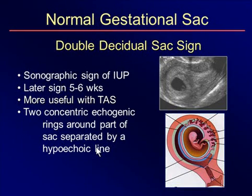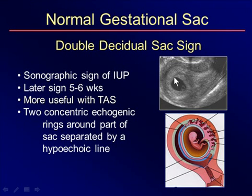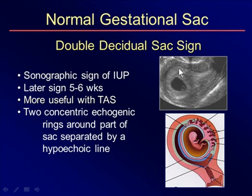Now let's talk about the double decidual sac sign, which is another sign of intrauterine pregnancy seen a little later at five to six weeks menstrual age. It's more useful with transabdominal sonography but can help periodically with transvaginal scans. Basically we see two thick echogenic bands around the pregnancy — a thick band surrounding the gestational sac itself, which is a combination of chorionic and decidual tissue, then a thin lucent hypoechoic stripe representing the collapsed potential cavity, and then another thick band on the other side representing the decidua parietalis. Not around the entire sac, but certainly around a portion of it. If we see that, it's very helpful in guiding us toward an intrauterine pregnancy.